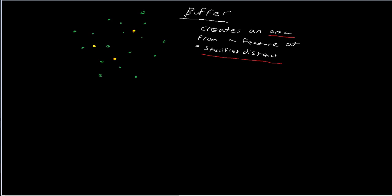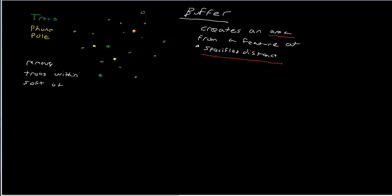Let's take a look at this set. We have two sets of points. We have the yellow points which represent proposed locations of telephone poles, and then we have the green points that represent trees. What we're trying to do is figure out for each of these different pole locations, how many of these trees we have to remove, assuming that we need to remove trees that are within 50 feet of the poles.